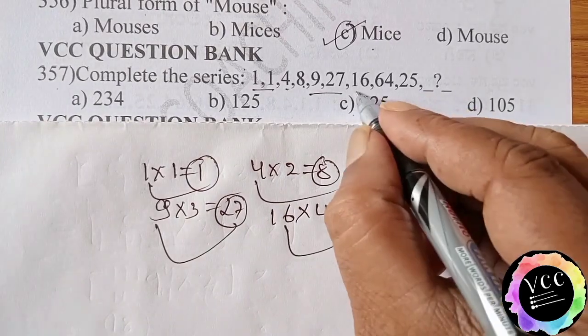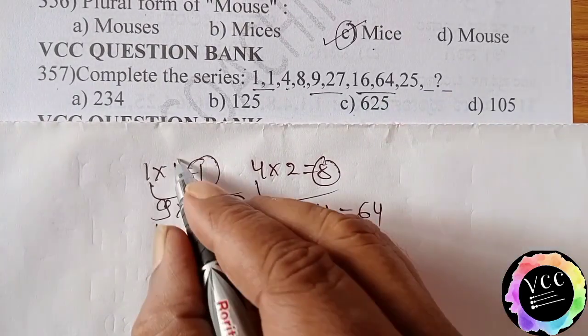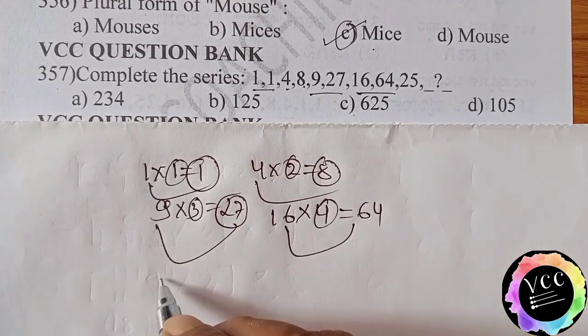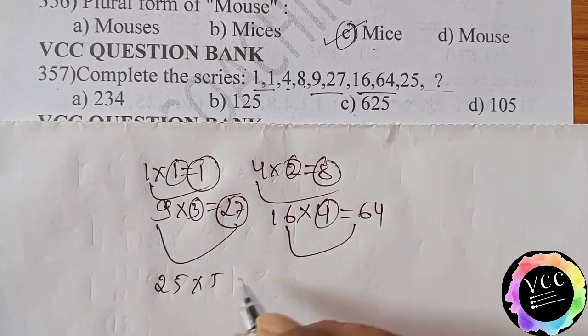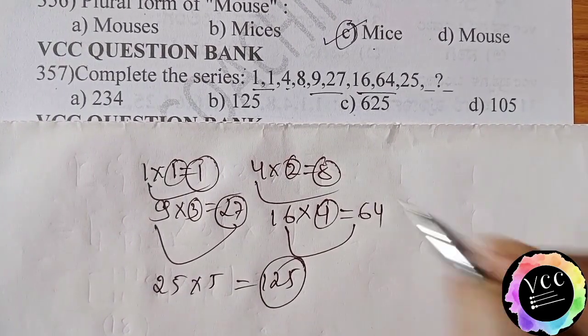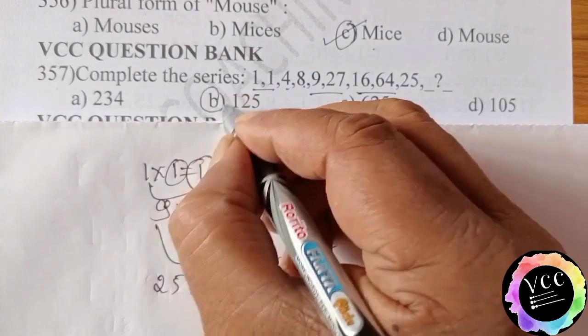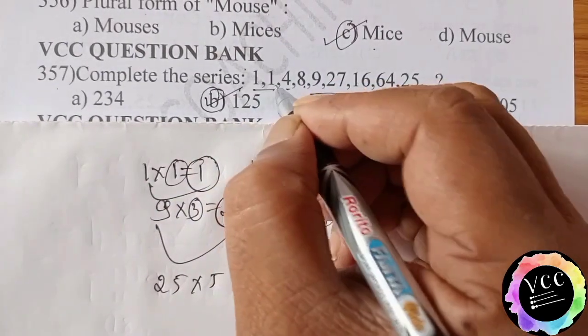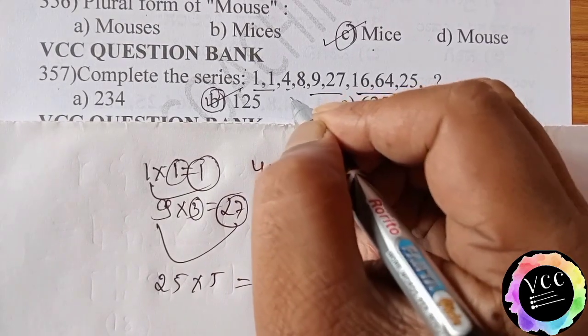Here also 16 and 64 came, so here 1, 2, 3, 4. Here 25 times 5, means 125. 125 is the right answer. Option B is the correct answer. Dear students, this type of questions will come in Sainik School. This is also a part of Sainik School previous year paper question.